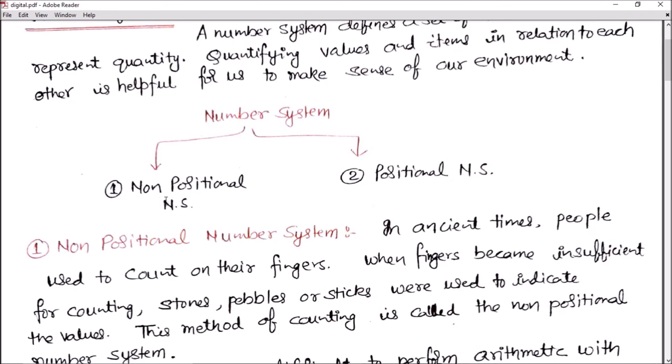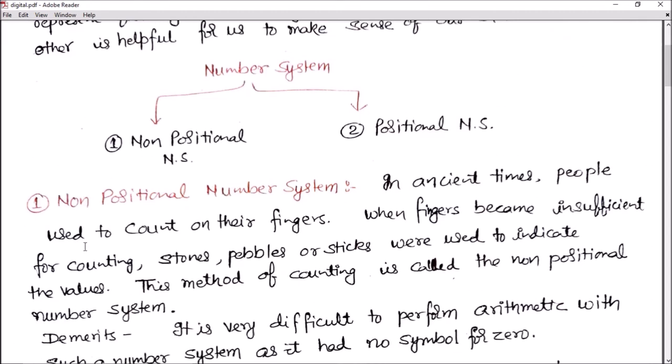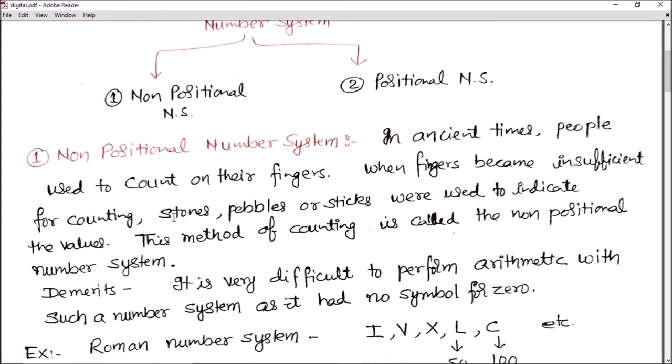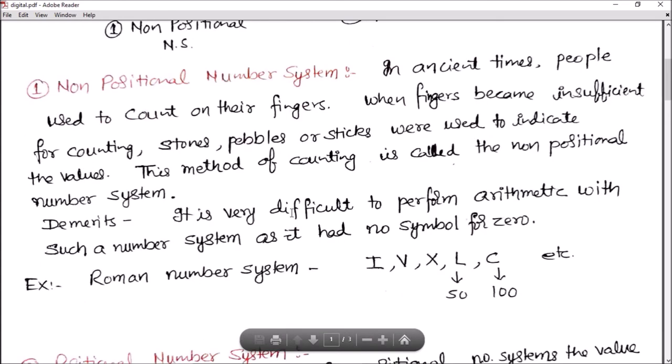Non-positional number system and positional number system. Non-positional number systems were used in ancient times. People used to count on their fingers. When fingers became insufficient, they used counting with stones, pebbles, or sticks to indicate values. This method of counting is called non-positional number system.